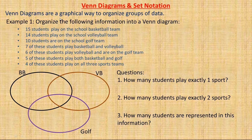Venn diagrams are a graphical way to organize groups of data, whether it's two groups, three groups, or more. To organize the data, you draw circles or ovals — you could make them a slightly different shape, but they're generally circles or ovals — and each of them represents a group of data.